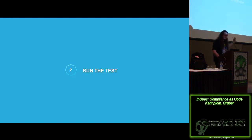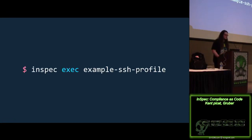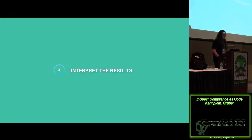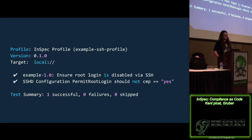Then you run the test on the command line: 'inspec' and then the path to the file, like an example SSH profile. You can optionally add a .rb extension to help with vim syntax coloring. The results would show green for passing, and red for failure. You can describe nginx configuration files or packages like nginx — whether it should be installed, what version you want specifically.